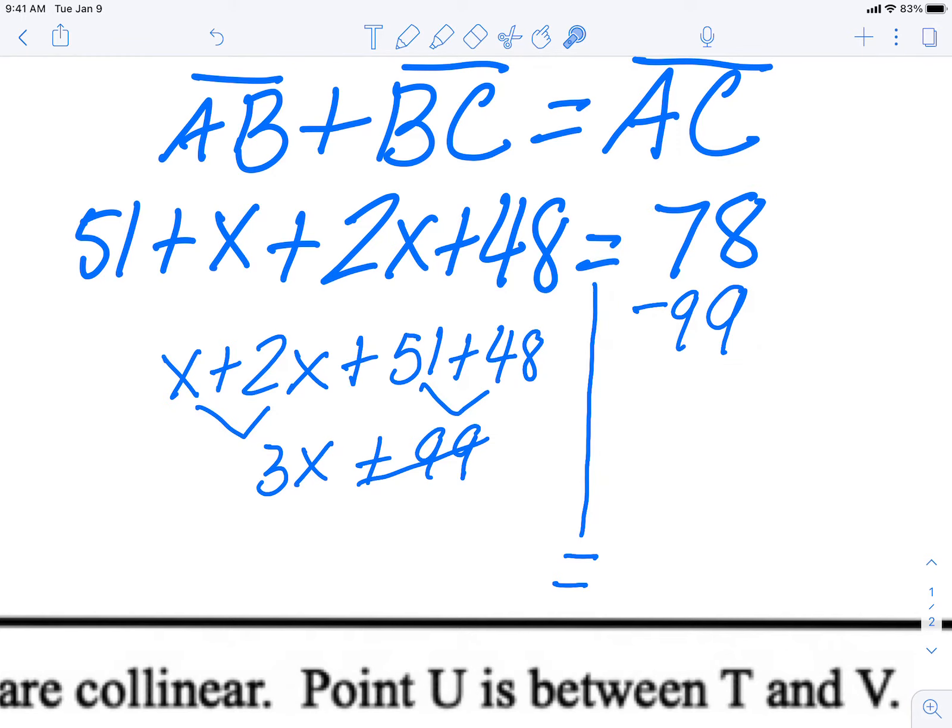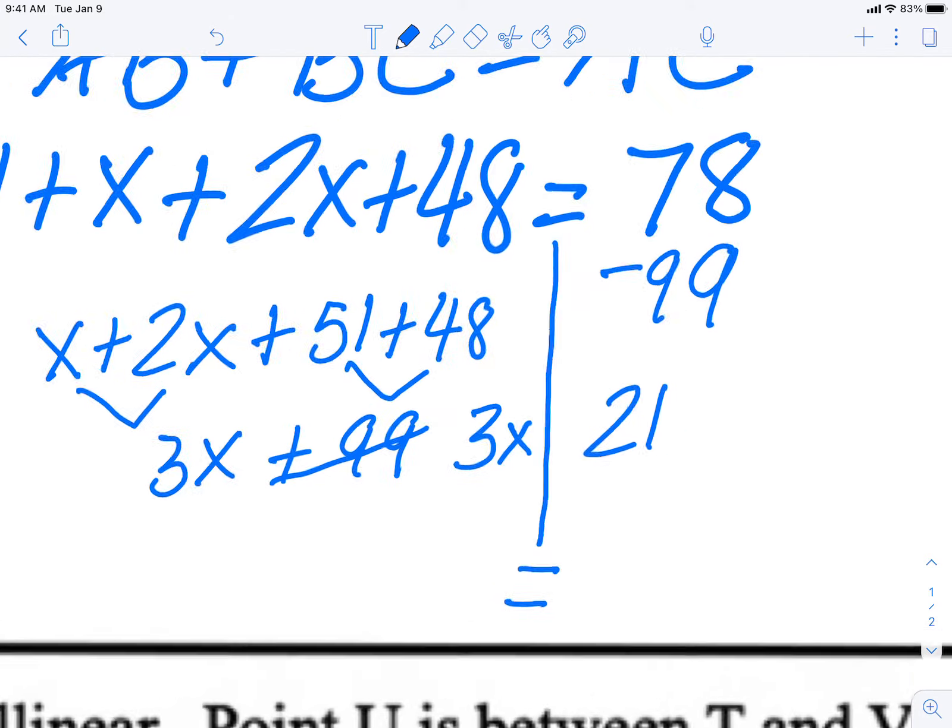And now a positive 78 and a negative 99 are not the same signs, so 99 minus 78 is 21.